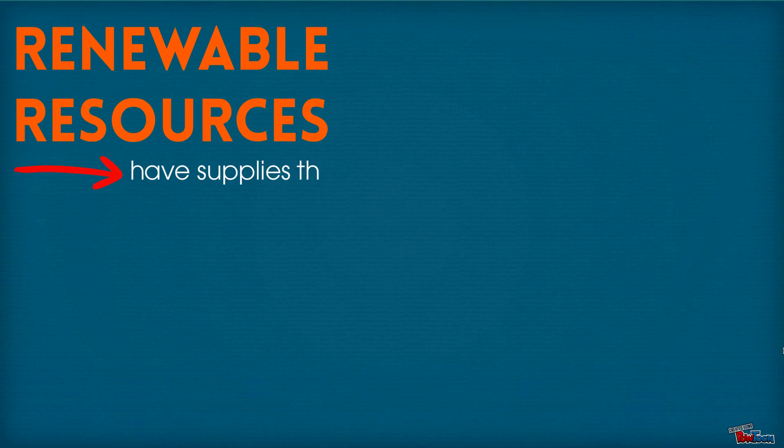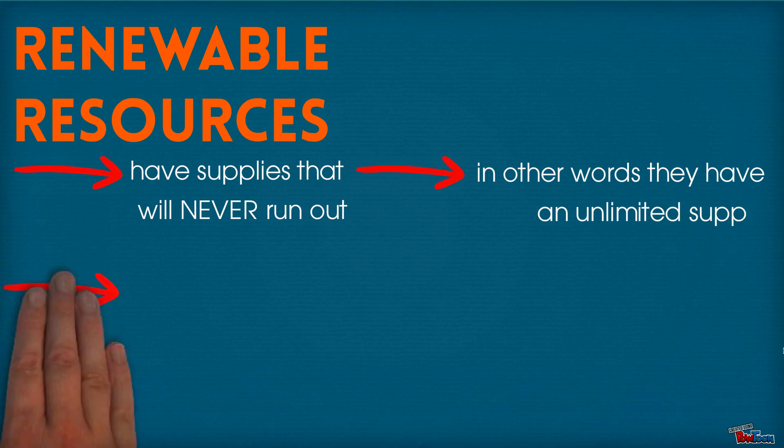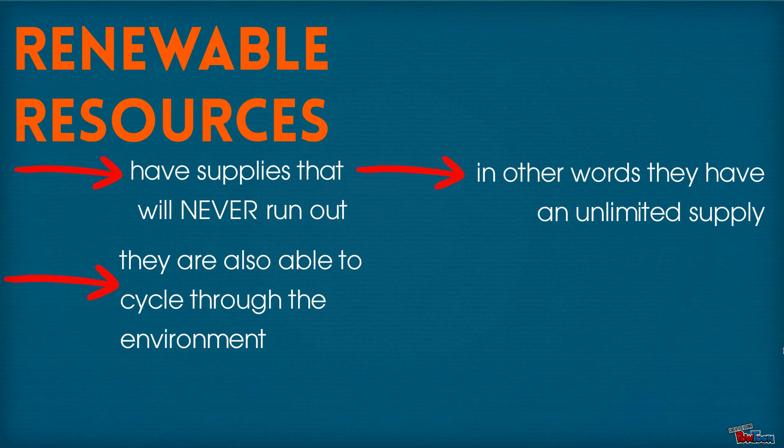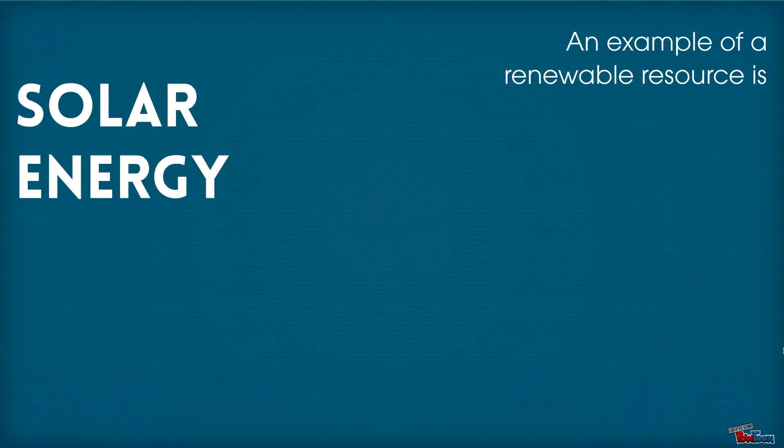Renewable resources have supplies that will never run out. In other words, they have an unlimited supply, and they are able to cycle throughout the environment. An example of a renewable resource is solar energy, energy from the sun, which constantly cycles in our environment.